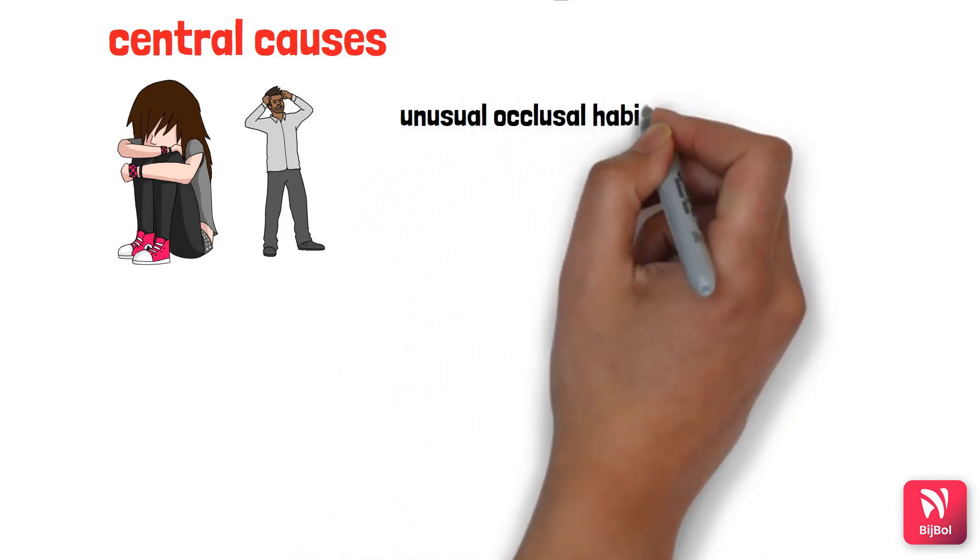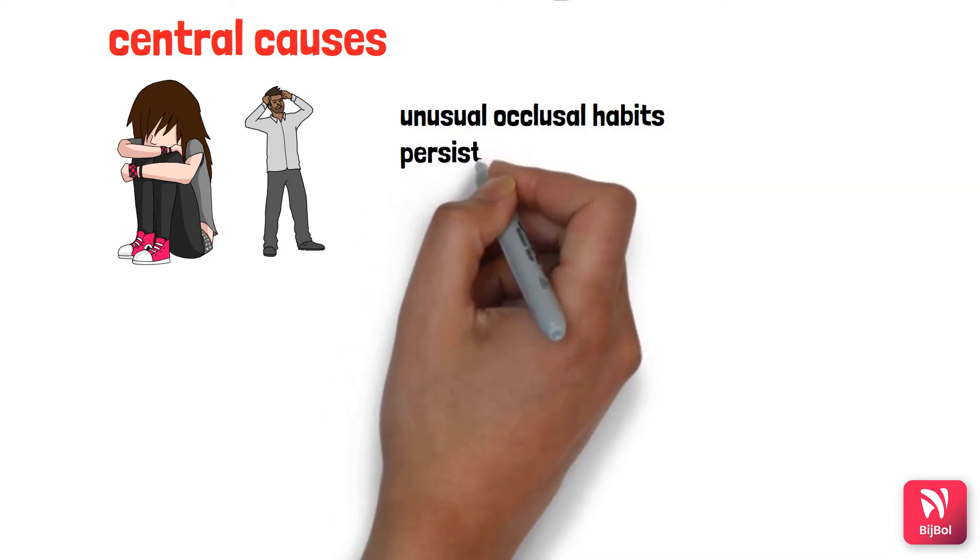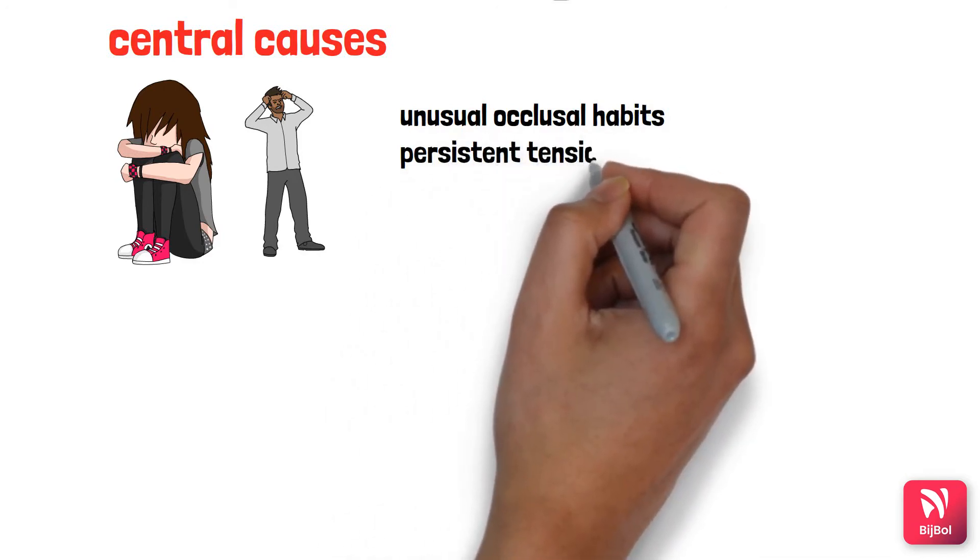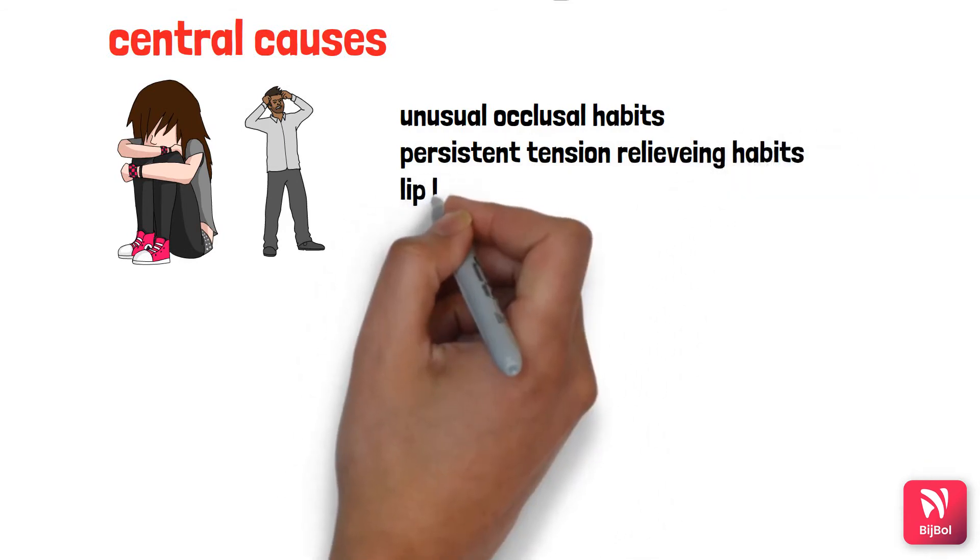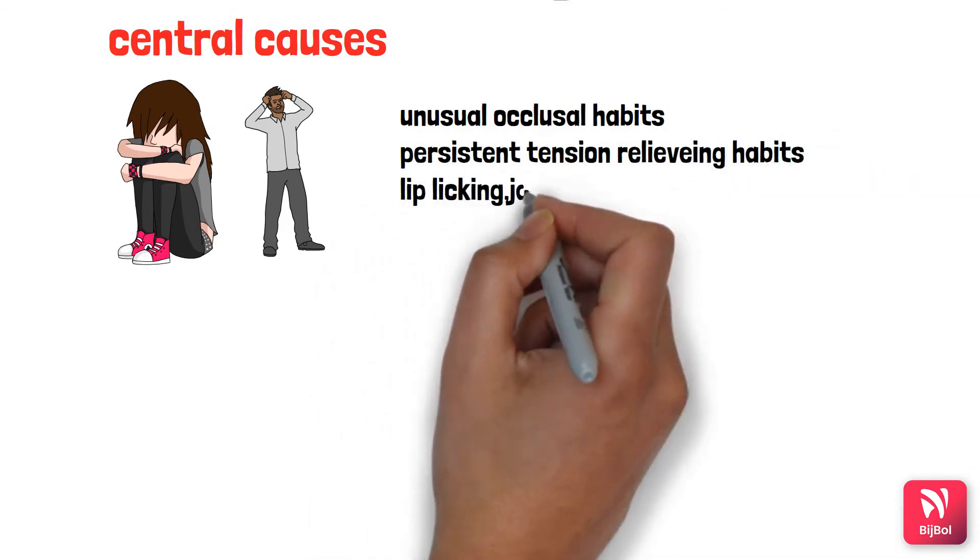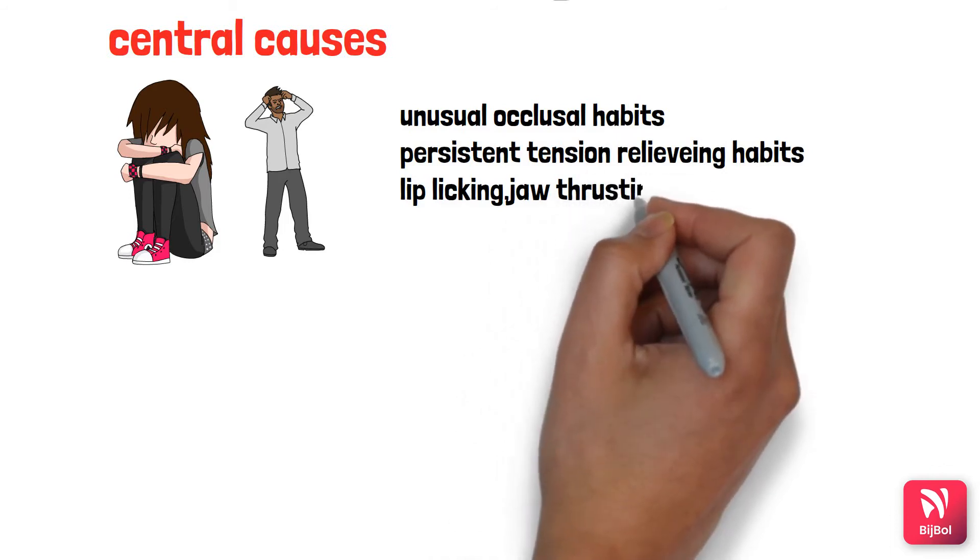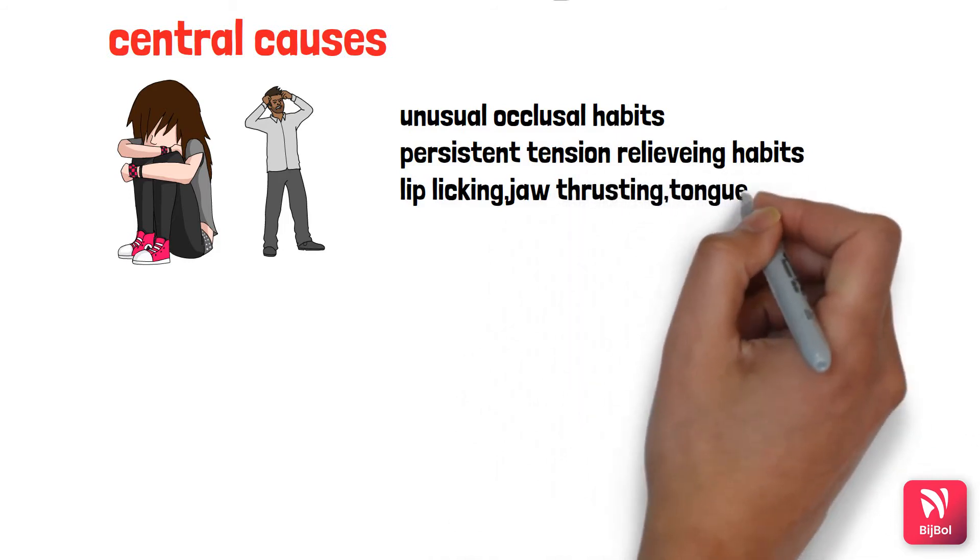like lip smacking, tongue thrusting habits, and bruxism. All these lead to alteration or micro and macro trauma within the masticatory muscles, causing MPDS. Sleep disturbances also have a major effect on